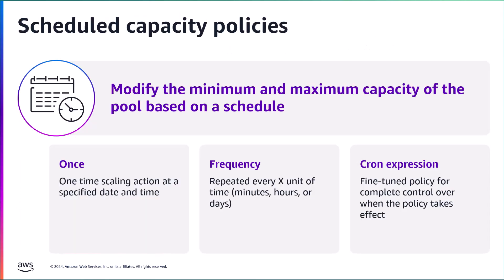WorkSpaces Pools supports three types of scaling policies. The first are scheduled capacity policies. These policies modify the minimum and maximum capacity values on a set schedule. These can be triggered once, at a set repeated frequency, or configured by a cron expression for ultimate flexibility.